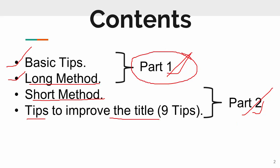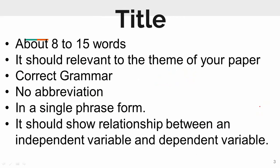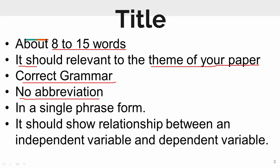Now we will focus on Part 1, starting with the basic tips for your research article title. It should be about 8 to 15 words. It should be relevant to the theme of your research paper. The grammar should be correct. You should not use any abbreviations in the title. It should be in a single phrase form.